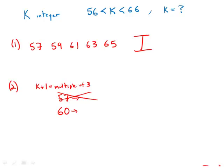60 is a multiple of 3, so k could be 59. 63 is a multiple of 3, so k could be 62. 66 is a multiple of 3. That means k could be 65.